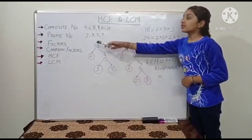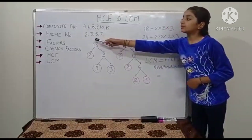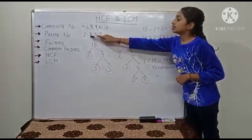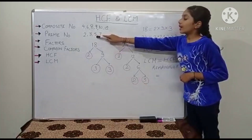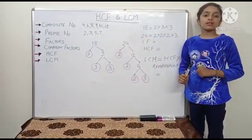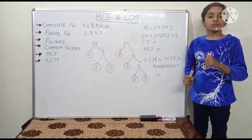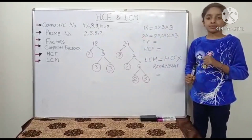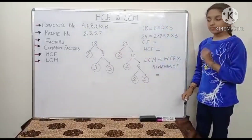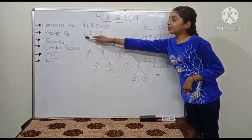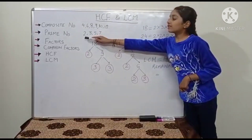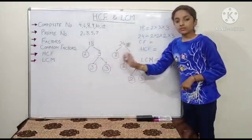Now we will come to prime numbers. Prime numbers are 2, 3, 5, 7, etc. Prime numbers are those numbers which can't be divided completely except by the number itself and 1. For example, 2 can be divided by only 2 or 1.